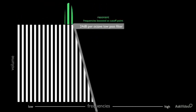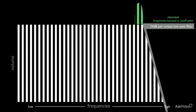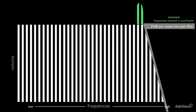When the cutoff point is varied by control voltage, this frequency boost moves through the frequencies present along with the cutoff point.